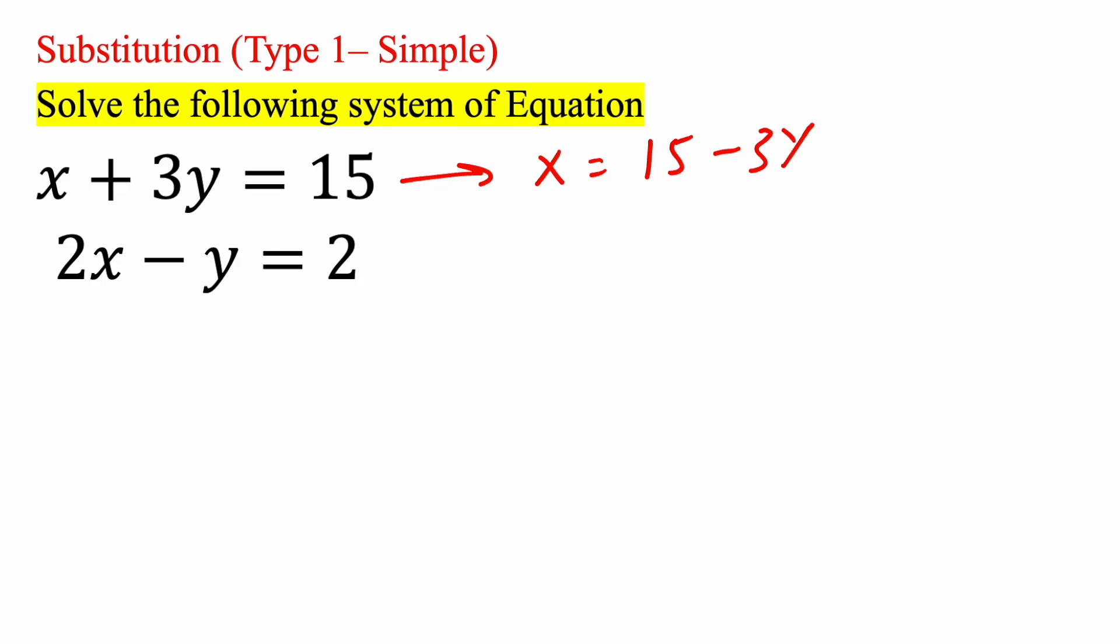Now it's called the substitution method for a reason. x is equal to 15 minus 3y. We're going to substitute, we're going to replace x with that. So now we're going to say we have two parentheses, 15 minus 3y, close parentheses, minus y is equal to 2.